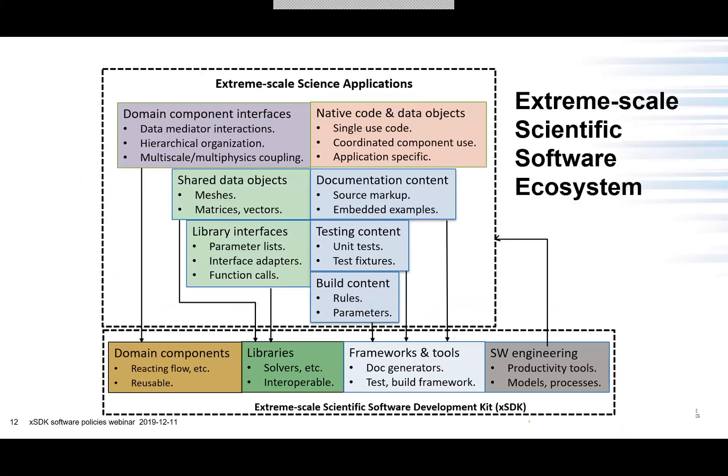Here's the overall extreme scale scientific software ecosystem we were looking into. On top, you have the extreme scale science applications, which have interfaces to domain components — reusable small physics pieces like reacting flow doing multiscale multiphysics coupling. Then there are interfaces to individual libraries, which can be solvers and mesh systems. There is also documentation, testing, building content, frameworks and tools underneath, and a software engineering portion. The XSDK consists of domain components and libraries as well as different frameworks, tools, and software engineering portions.